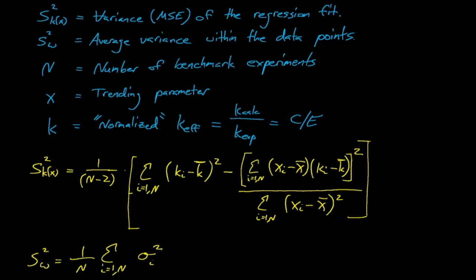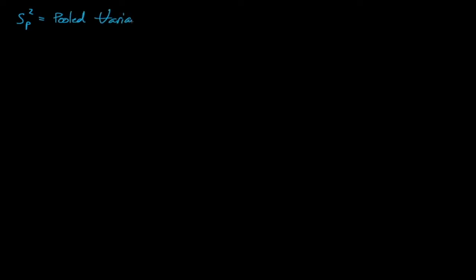From here, we can combine these two variances using propagation of uncertainty to obtain the overall pooled variance of the regression fit, s_p. Now, we won't dive into the specifics of the next steps, but once we have s_p,